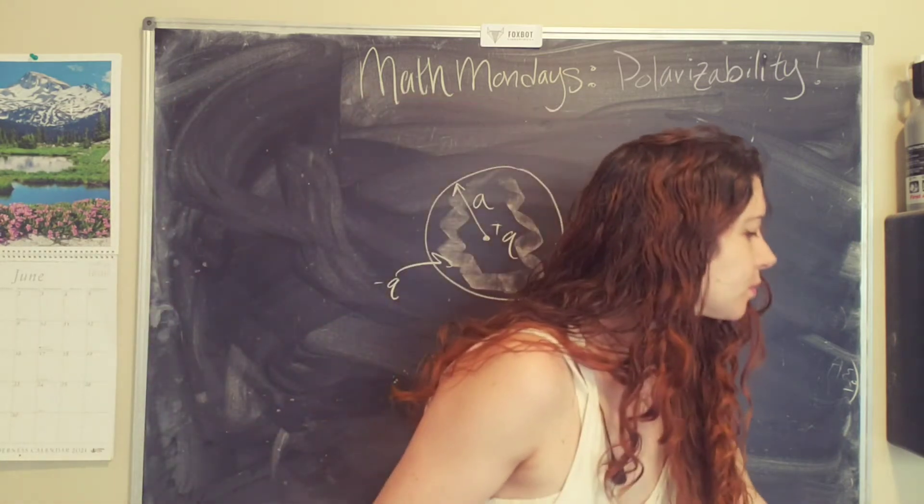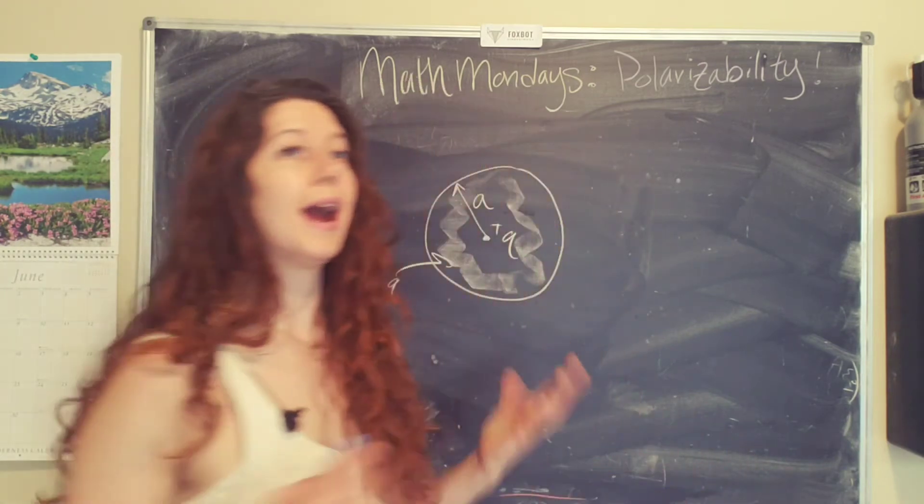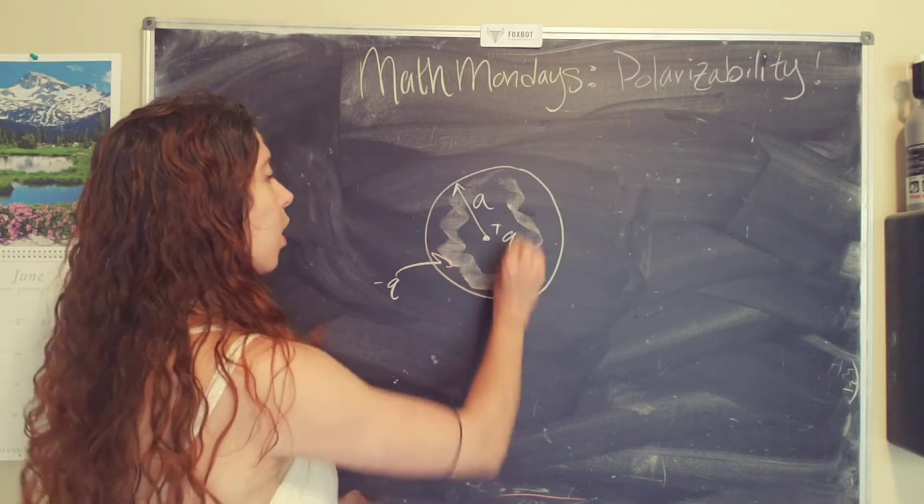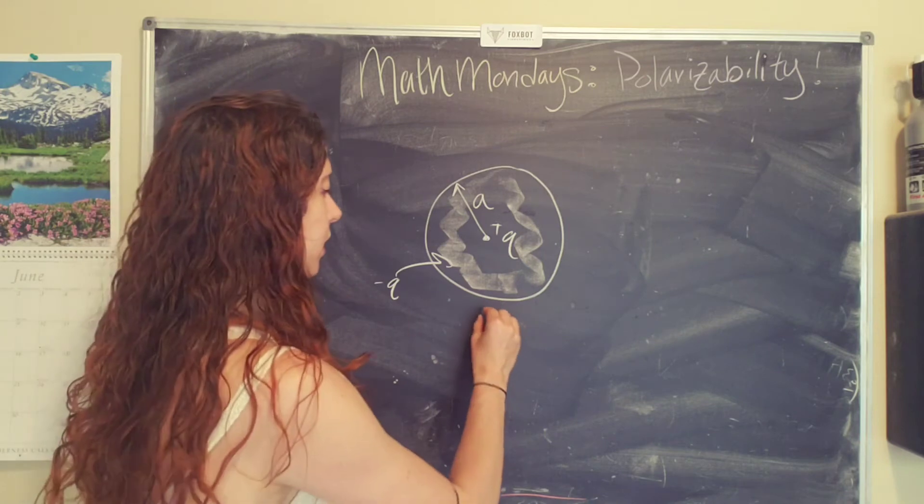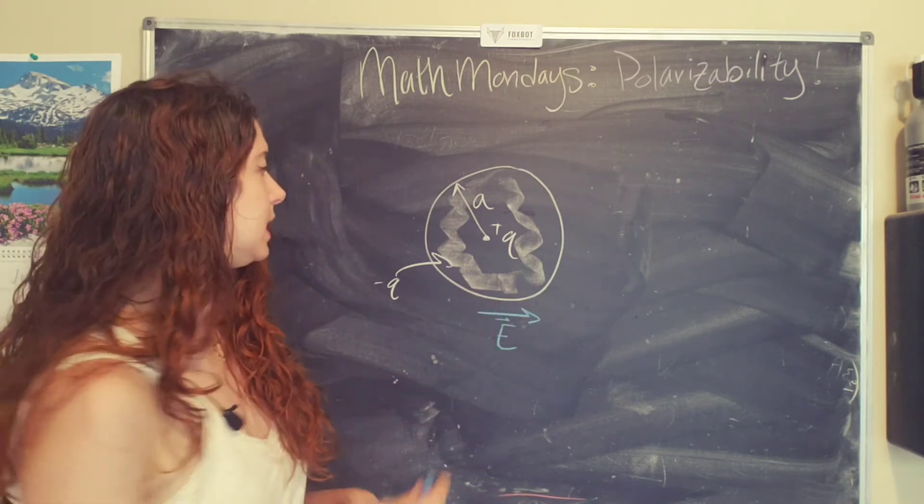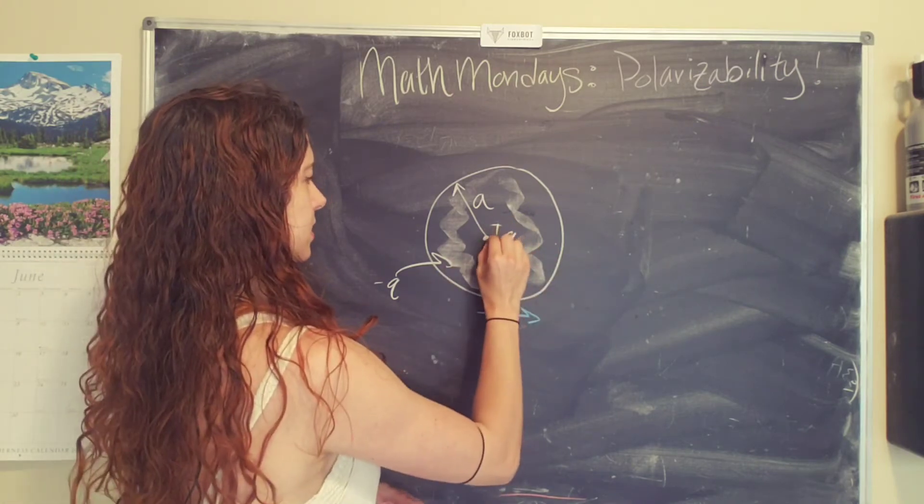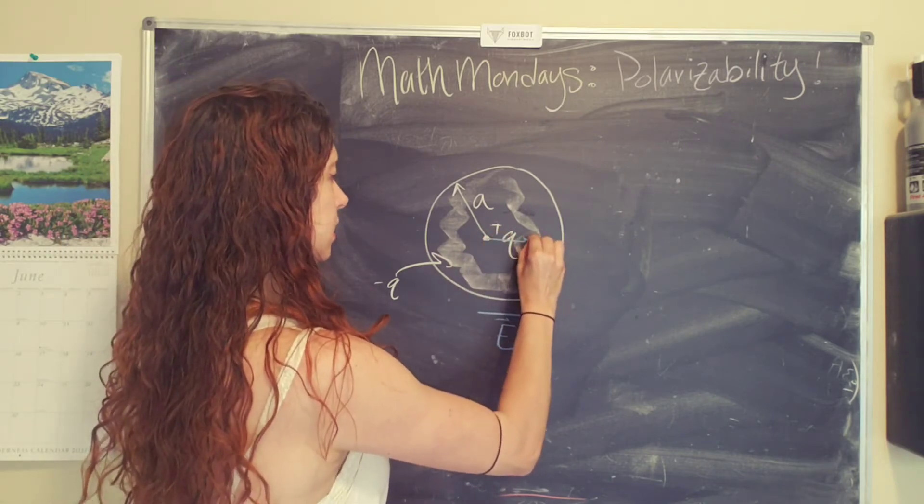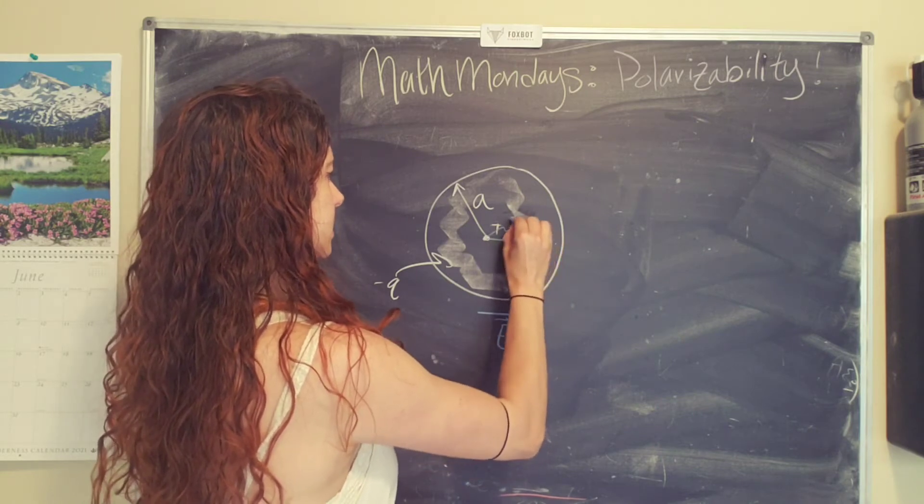So first, basically what we want to do is say, what happens in the presence of an external electric field? How is this atom going to respond to that electric field? So let's assume that we apply an electric field E. Then we know that this positively charged nucleus is going to move a distance d. We don't know exactly what it is, but that's okay. So this distance is d.